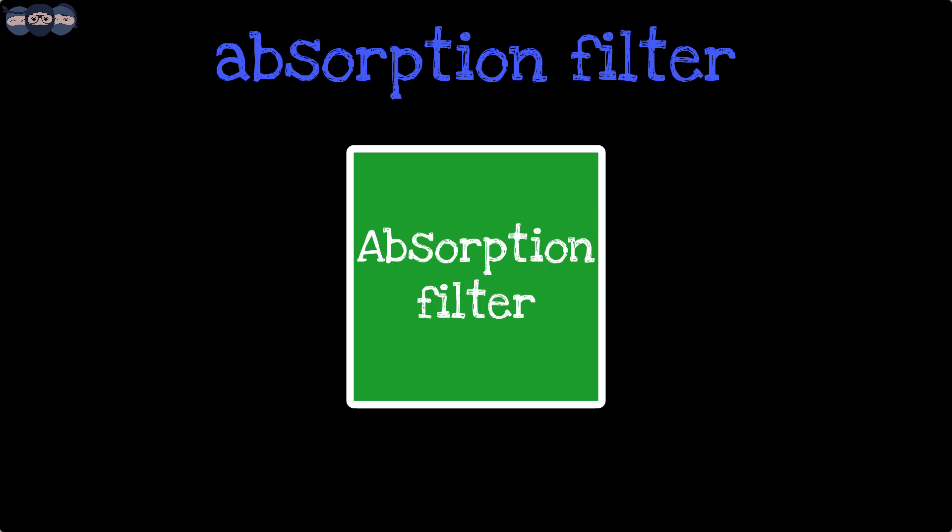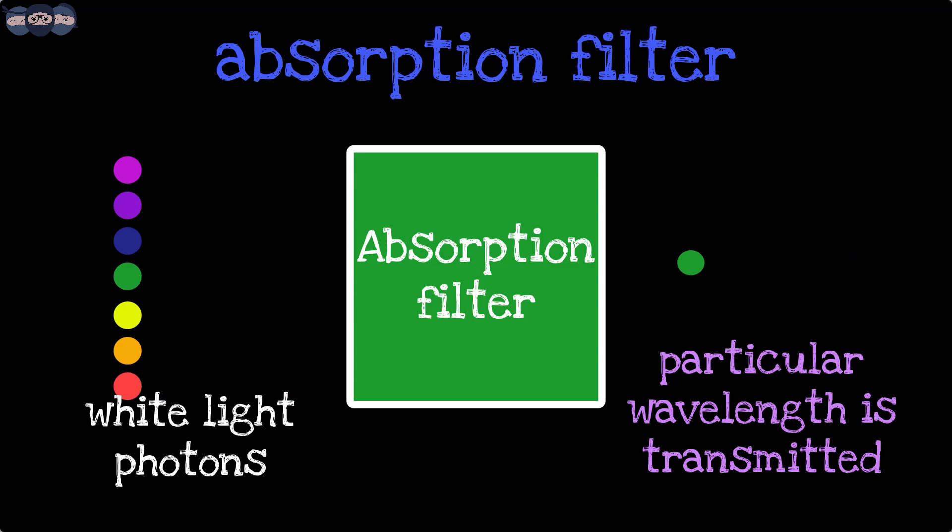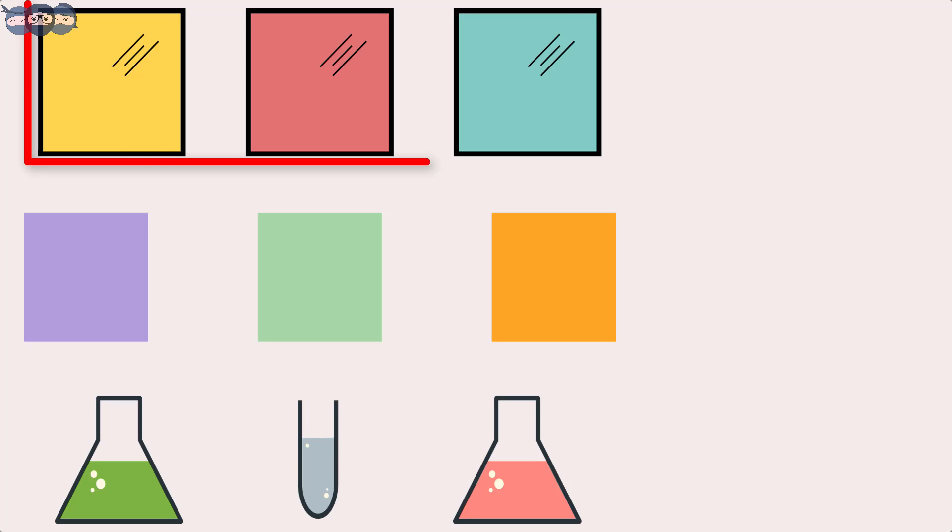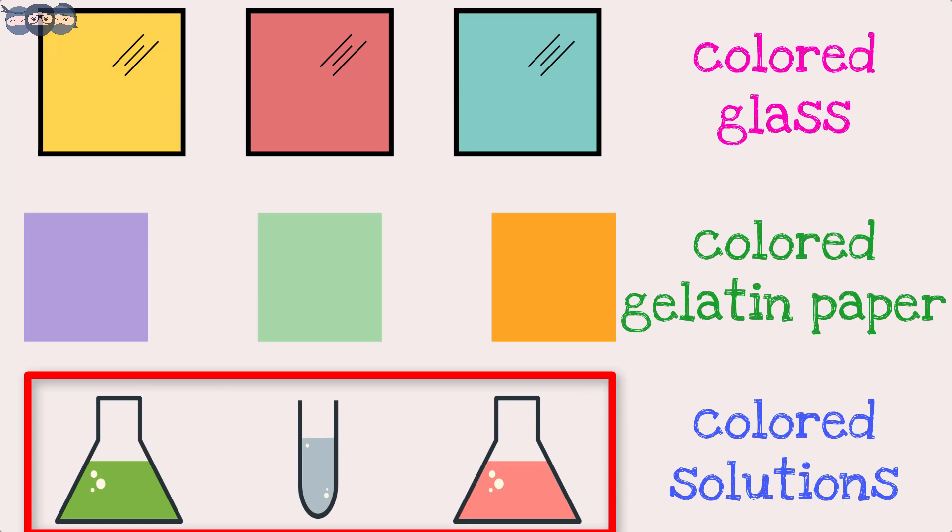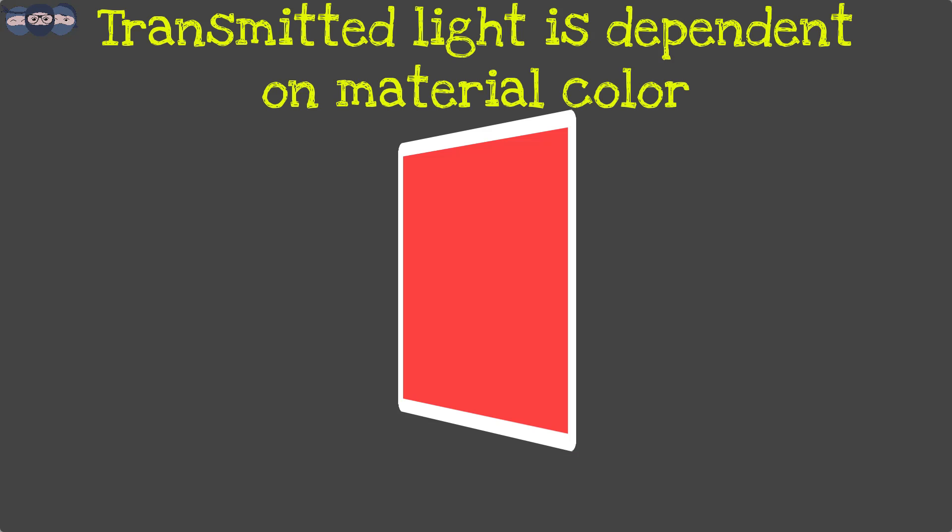The absorption filters absorb light of certain wavelengths and only allow radiation of a particular wavelength to pass through it. They are made of materials like colored glass, colored gelatin papers, or colored solutions. The light allowed to pass depends on the material color.